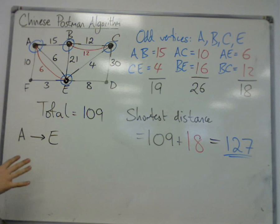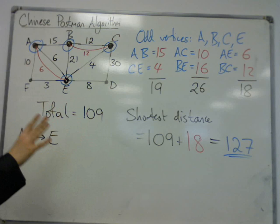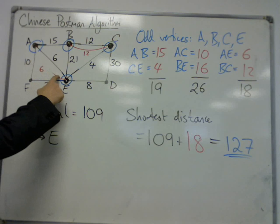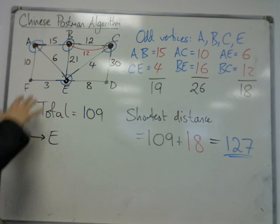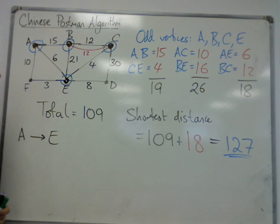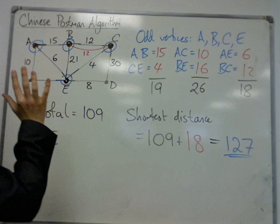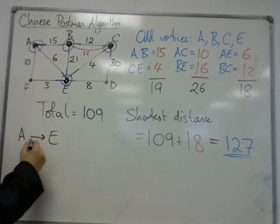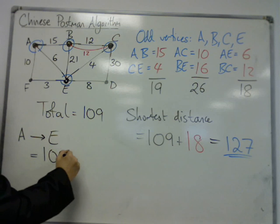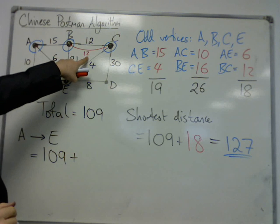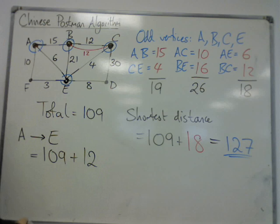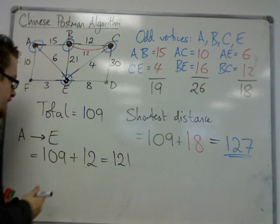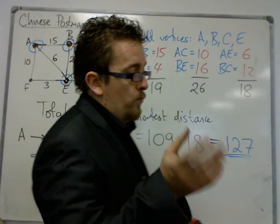So, in order for that to happen, B and C must be even, while A and E remain odd. So, if I scrub out this repeated edge, we now have A and E remaining odd, but B and C now becoming even. So, this makes it a semi-Eulerian graph. So, if you want to start at A and end up at E, then the shortest distance is 109 plus, not 18, just the 12. In other words, 121. So, that would solve that problem.